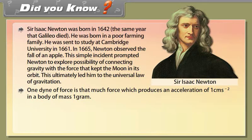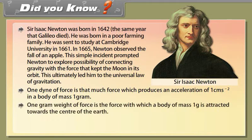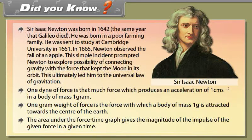One dyne of force is the force which produces an acceleration of 1 cm/s² in a body of mass 1 gram. One gram-weight of force is the force with which a body of mass 1 gram is attracted towards the centre of the earth. The area under the force-time graph gives the magnitude of the impulse of the given force in a given time.